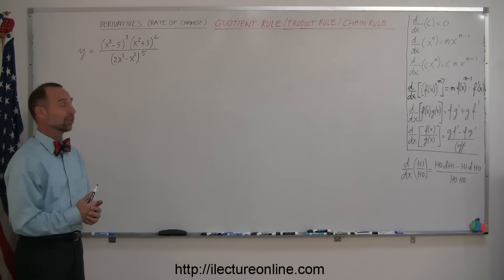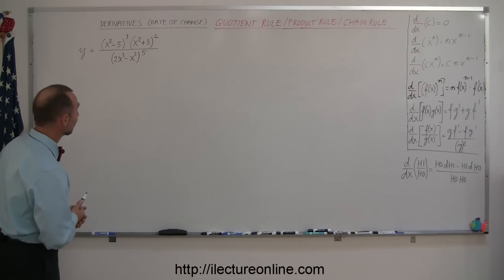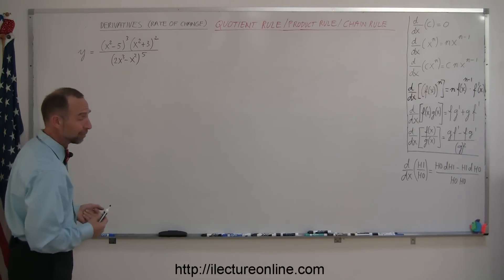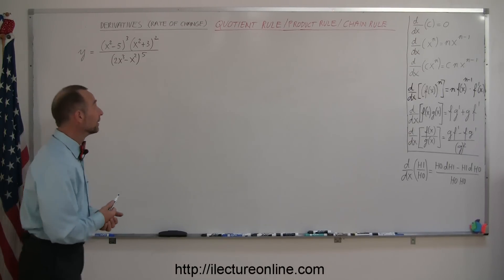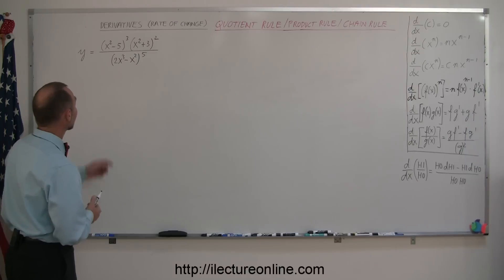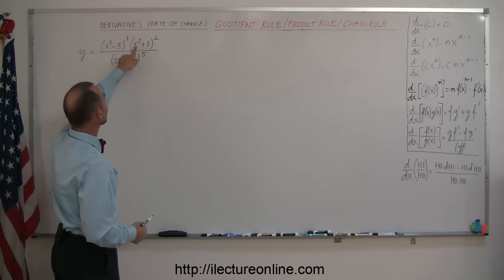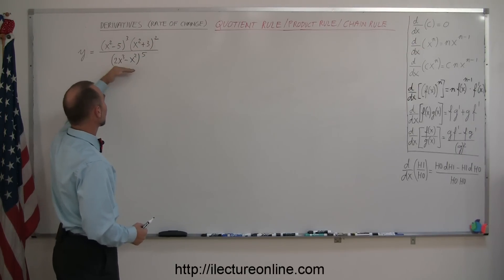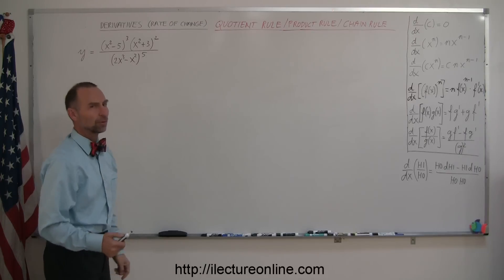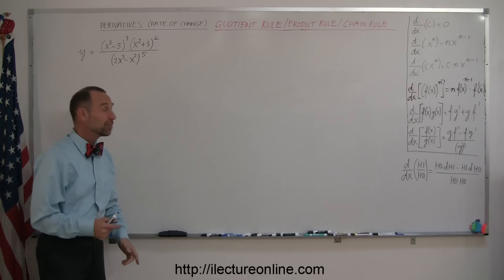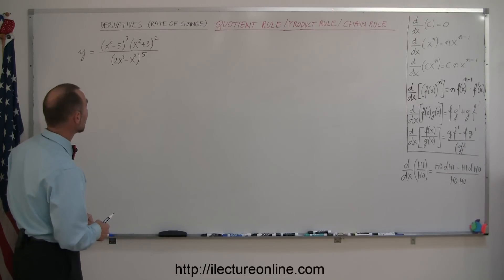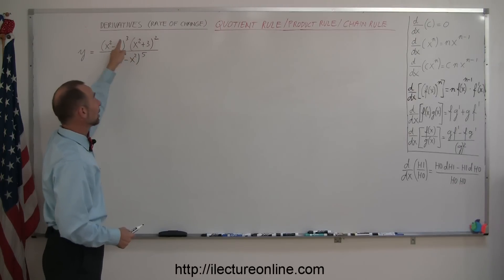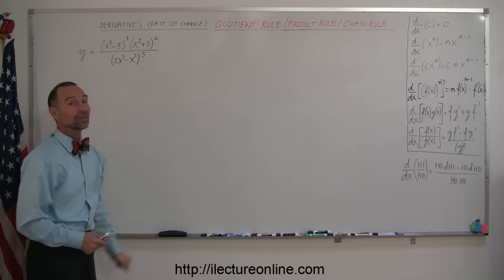Welcome to iLecture Online. Here's another example of how you take a derivative of something that is beginning to look a little complicated. We have two functions that are multiplied together, each raised to some exponent, and then divided by another function that is also raised to an exponent. Which means we are going to have to use the product rule, the quotient rule, and the chain rule all in the same problem.